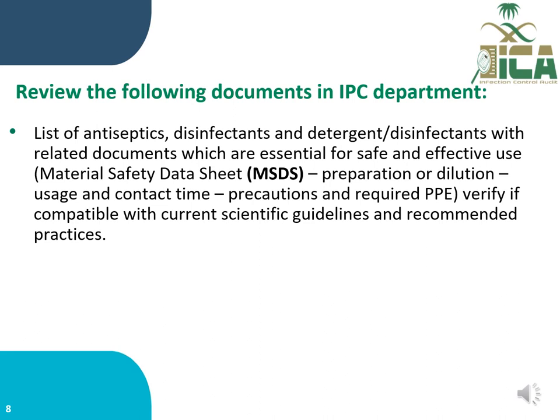The first activity is reviewing available documents in the Infection Prevention and Control Department. You can request the list of approved antiseptics, disinfectants, and detergents with related documents essential for safe and effective use. You can check the material safety data sheet attached to this list, the regulatory approval, and verify that the list is based on current scientific guidelines, recommended practices, and approved by the MOH.